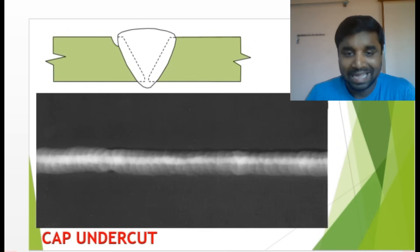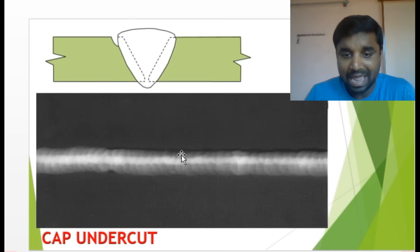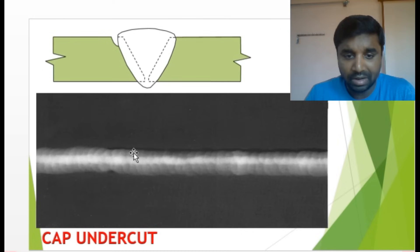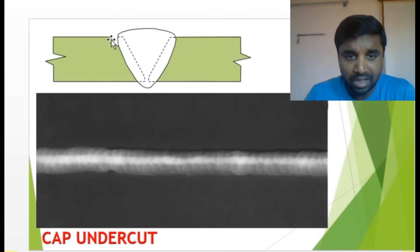Cap undercut — similar to root undercut, but there are two black bottom lines coming in the cap area. This line is called cap undercut. In the actual weld image, you can see root undercut where the parent metal has melted.